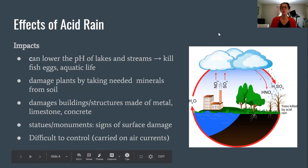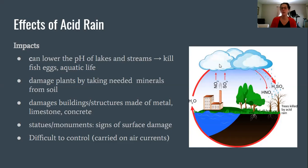Here you have the water cycling through, and here you have the source of the pollution. It's going up, but it's not causing acid precipitation over that industrial area — it's actually causing it over these natural areas, ones that could potentially have no human settlement, no communities, no villages, nothing.